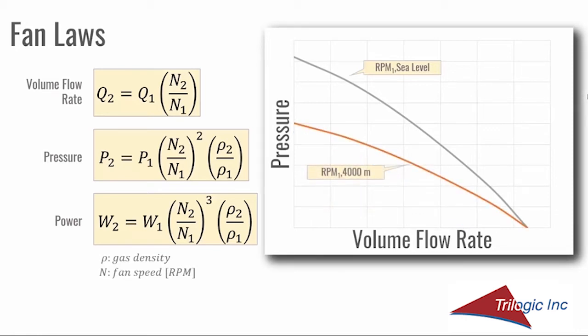If we plot the same blower at RPM1 but at an elevation of 4,000 meters, we can see the effect of density change on fan performance. The maximum volume flow rate of the blower doesn't change with elevation, but the fan will deliver less mass flow because of the lower density. We remember from thermodynamics that the temperature rise of the system is directly related to the mass flow rate, so at a higher elevation, more volume flow will be required to maintain the same mass flow rate.